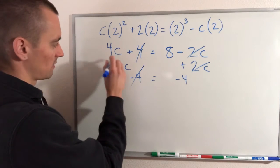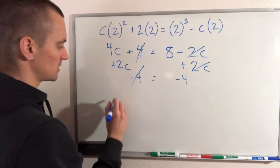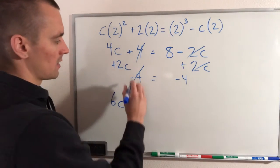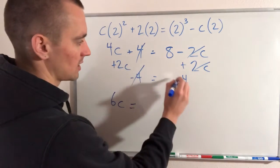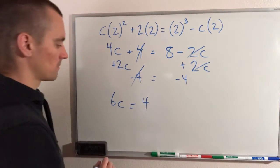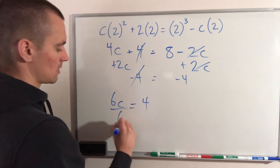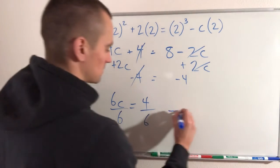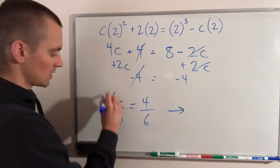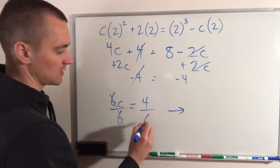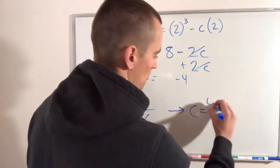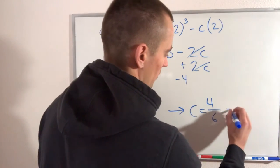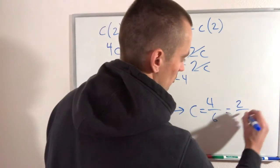So over on the left side, we'll just have 6c. 4c plus 2c would be 6c. And then over on the right side, we'll have 8 minus 4 would just be 4. Then we can divide both sides by 6. That will cancel with that. We'll just have c equals 4 over 6, which we'll just simplify down to 2 over 3.